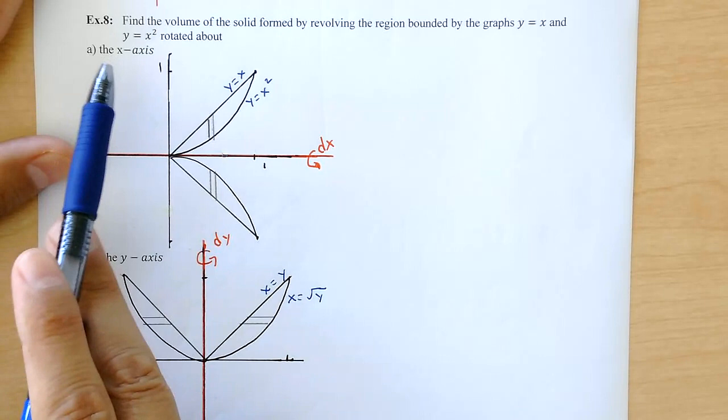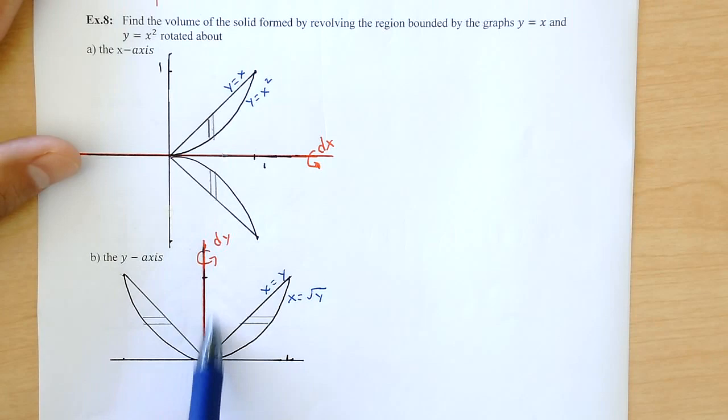Part A, we're rotating about the x-axis, horizontal. Part B, about the y-axis, vertical. So we're going to have two different problems here.